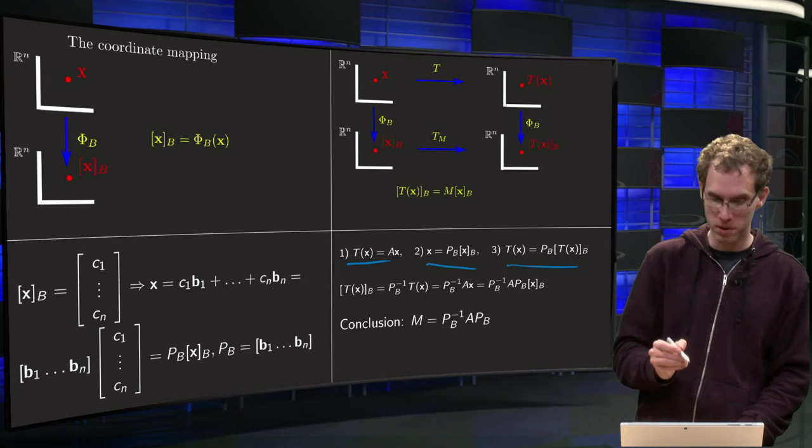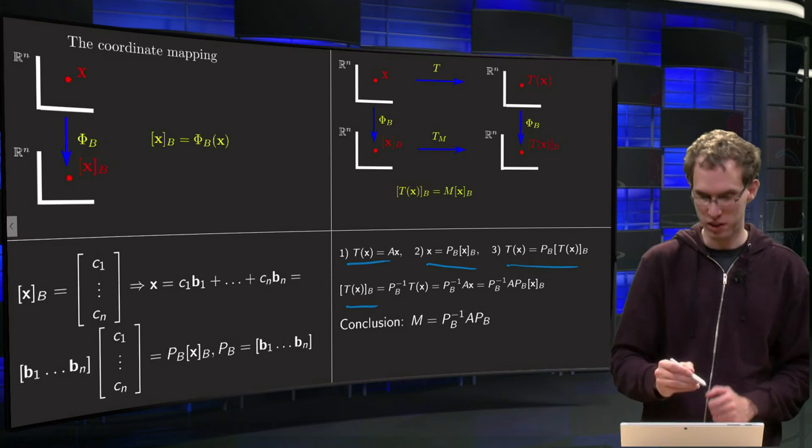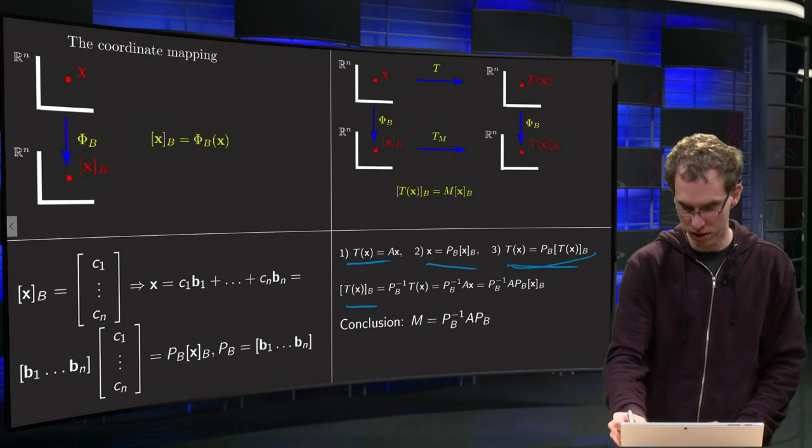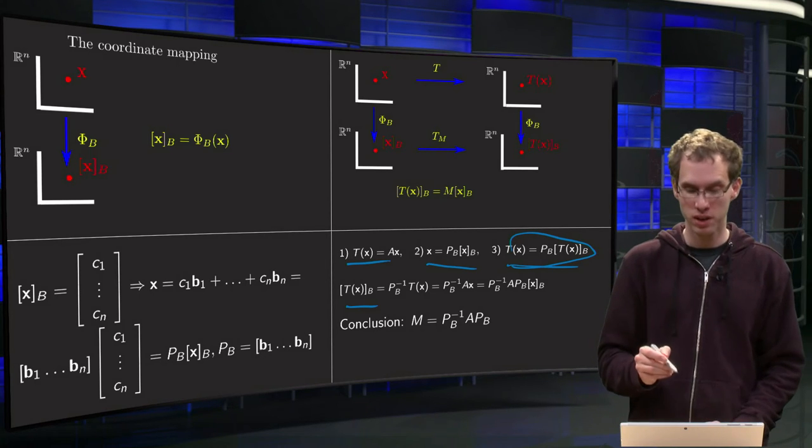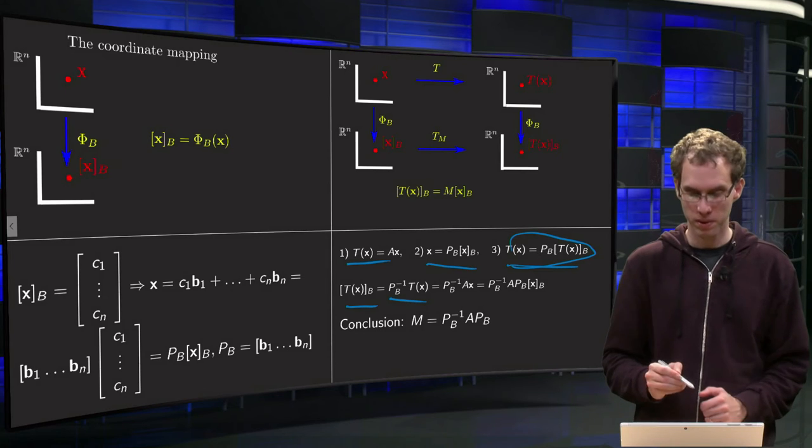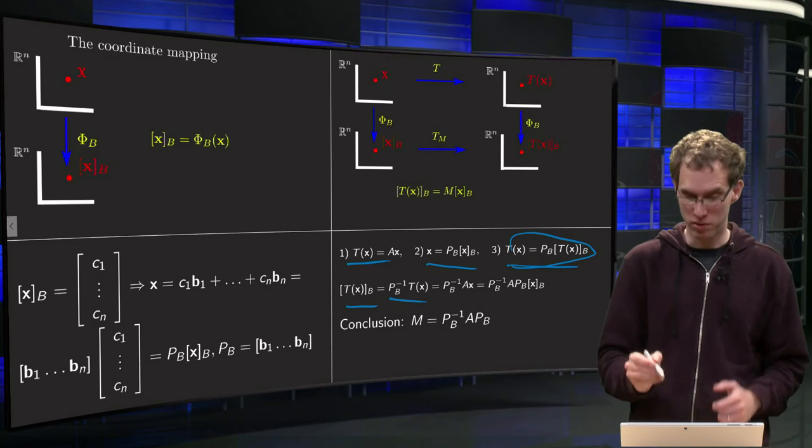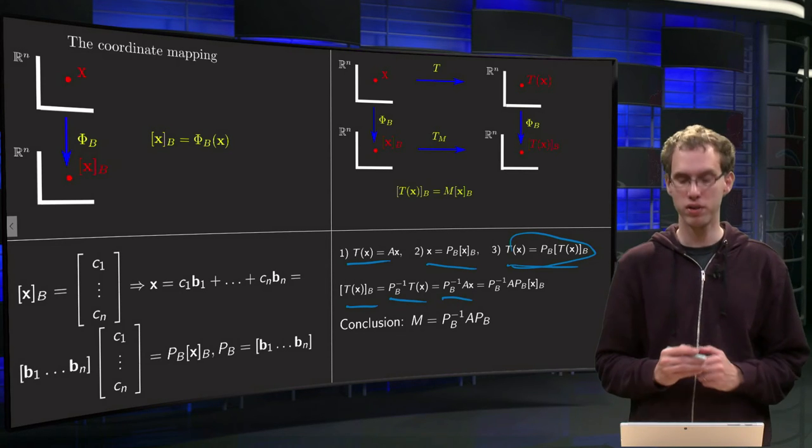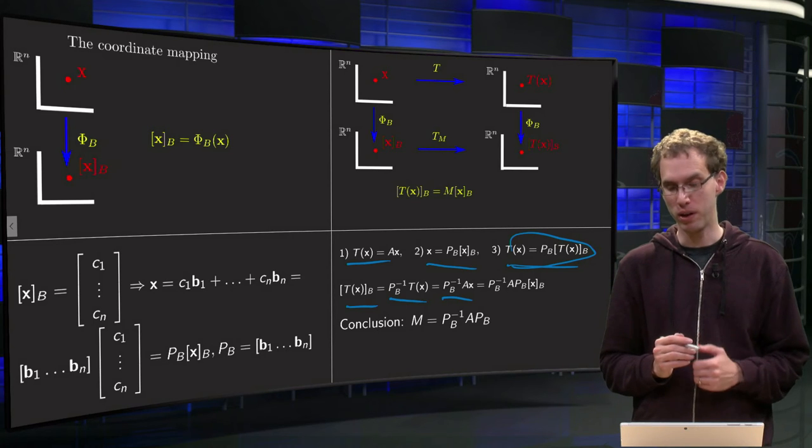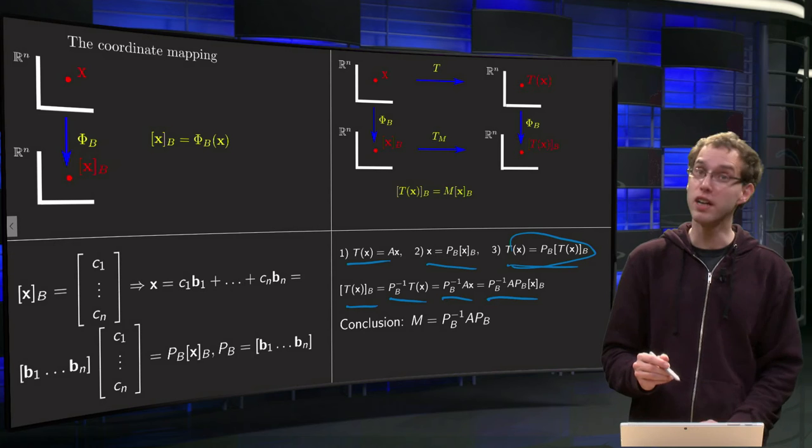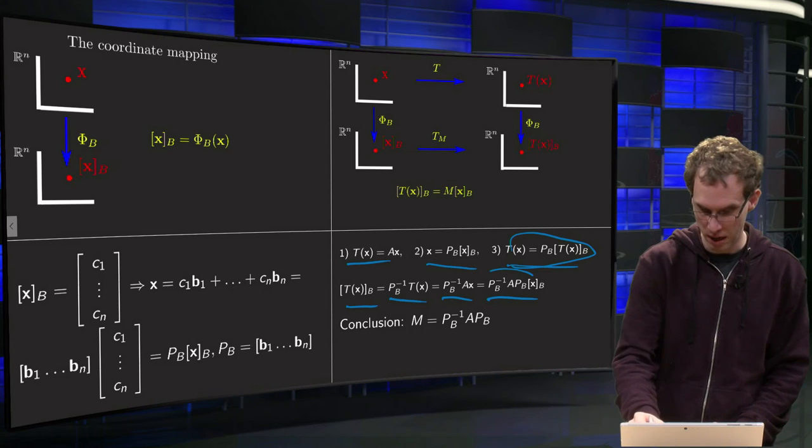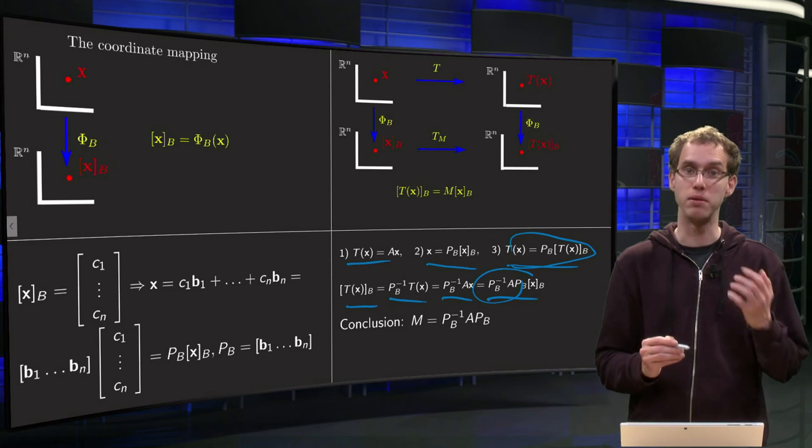And then we combine all of them. So we start with T of x in the basis b, equals Pb inverse times T of x. Then we are over there. We know T of x equals A times x. Then we are over there. And we know x equals Pb times xb. Then we are over here. And then you can read off what your matrix M is. M is just Pb inverse times A times Pb.